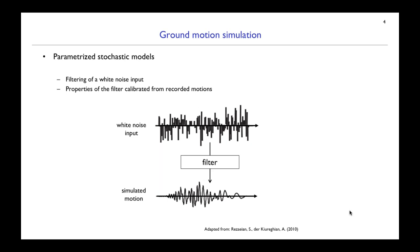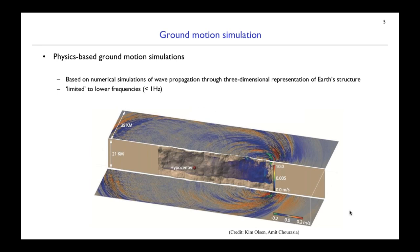On the other end of the spectrum are physics-based ground motion simulations, based on numerical simulations of waves propagating through three-dimensional representations of Earth's structure. These explicitly capture effects like deep sedimentary basins. A limitation is that these simulations are currently limited to lower frequencies, generally below one hertz, due to computational demands and geophysical complexities. To address this, hybrid broadband simulations combine stochastic high-frequency simulation with physics-based longer-period simulation, spliced together to create broadband ground motion.